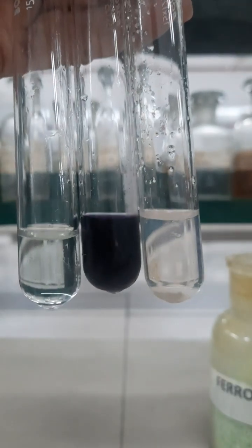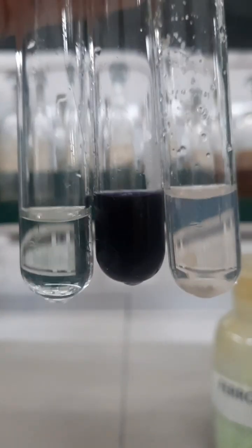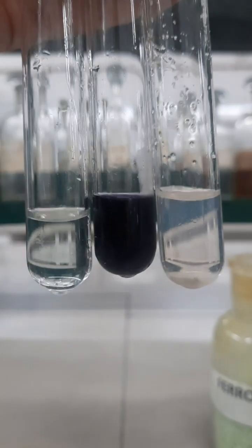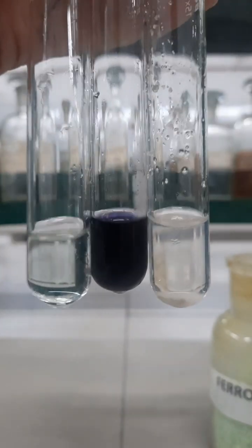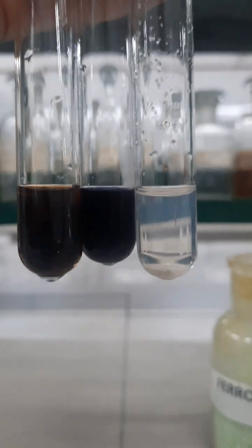In the third test tube, I am adding ferric chloride solution. After adding this ferric chloride solution, appearance of blood red color will confirm the presence of thiocyanate.